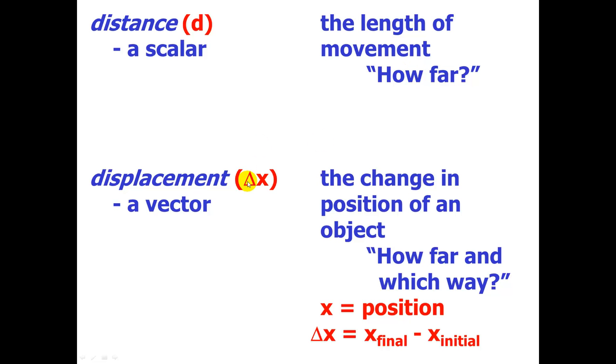Displacement has a different symbol. This triangle in front is called delta. It's a Greek letter. It means change. Change in x. X represents position, as shown down here in the bottom. When we talk about change in position, we compare the final position to the initial position. And, by definition, this is the change in position of an object, how far, and which way. So, displacement is a vector.